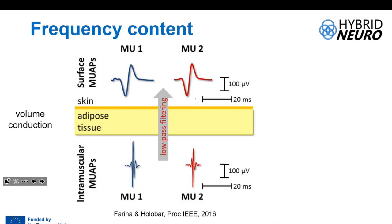When recording with a surface electrode, you place the electrode at the skin level; with intramuscular recording, you place the electrode within the muscle. These two action potentials recorded with each method show a huge difference in frequency content — very narrow in time within the muscle, but decreased in amplitude and wider in time at the surface, because the intervening tissue acts as a low-pass filter.